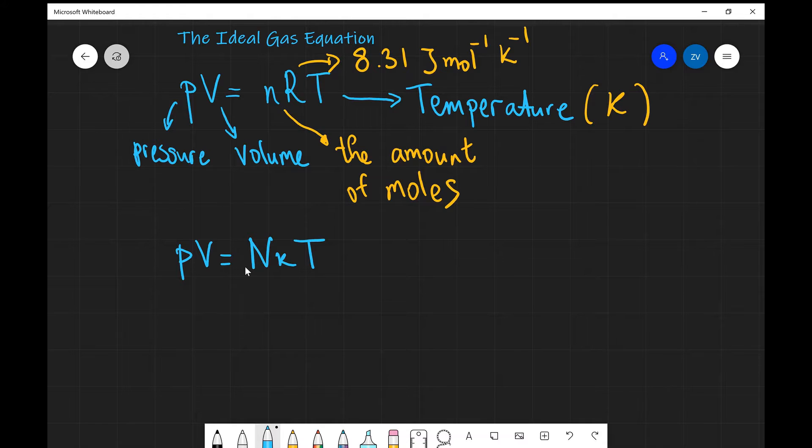N here, this capital N stands for the amount of particles. So how many particles does this gas actually consist of? That's the key difference. This is the number of particles.